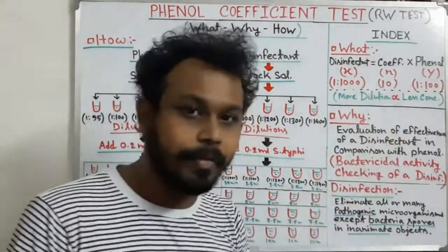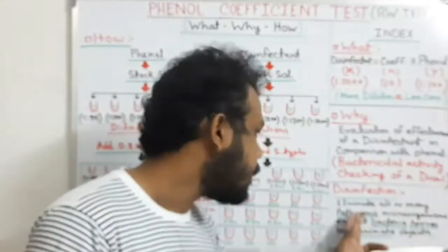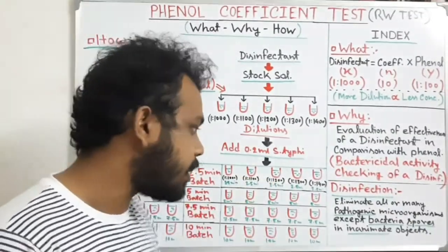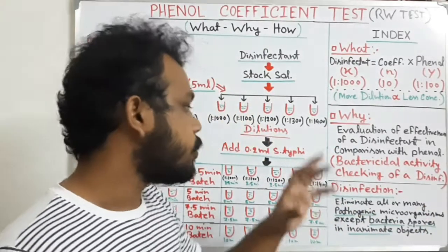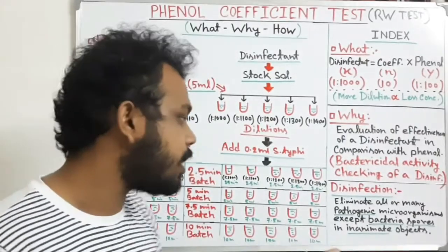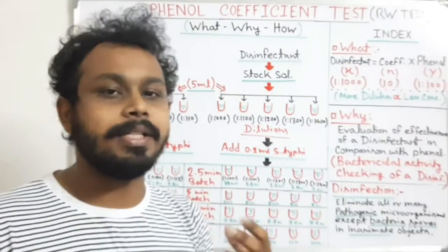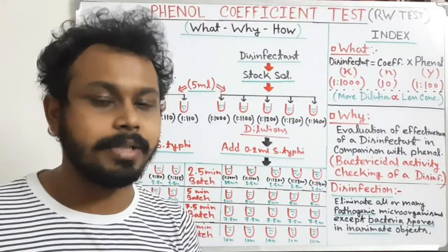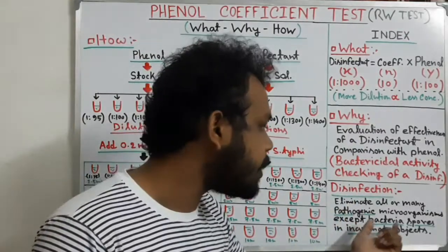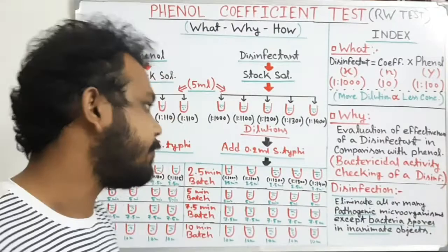Now here we have a term: disinfectant. So what is disinfection? Disinfection is a process to eliminate all or many pathogenic microorganisms and other vegetative microorganisms, but it cannot kill bacterial spores. Disinfectants are chemical compounds which kill pathogenic or vegetative microorganisms but not bacterial spores, and they can only be used on inanimate objects such as chairs and tables — not on living organisms or the human body.